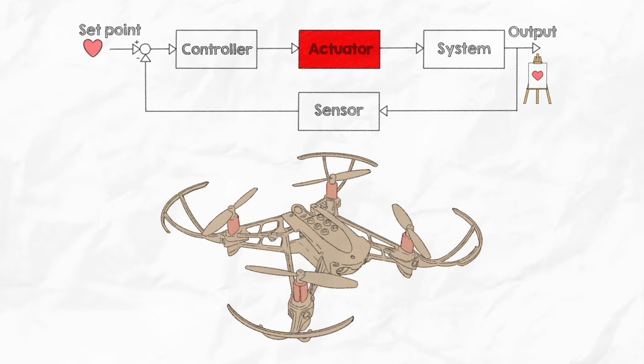First, the actuator is the motor that drives the propellers, allowing the drone to fly to its right location. A quadrotor drone has four motors.